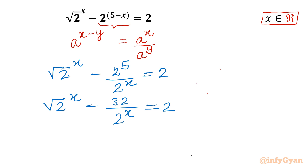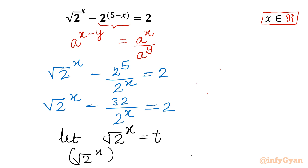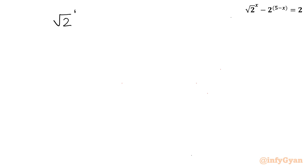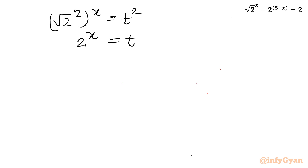Now we will use substitution. Let root 2 to the power x equal to t. Taking the square of this substitution: root 2 to the power x, whole squared, equals t squared. Applying the exponent law, root 2 squared to the power x equals t squared, and since root 2 squared is 2, we get 2 to the power x equals t squared. So in place of 2 to the power x we substitute t squared, and in place of root 2 to the power x we substitute t.